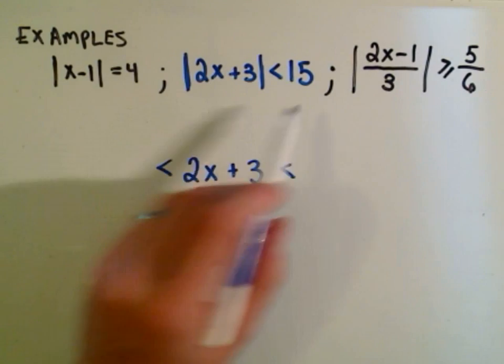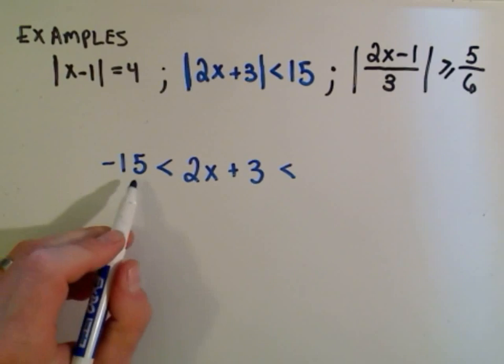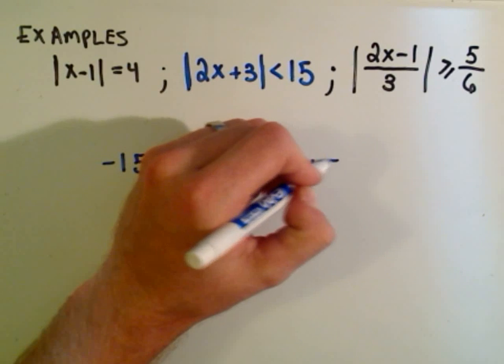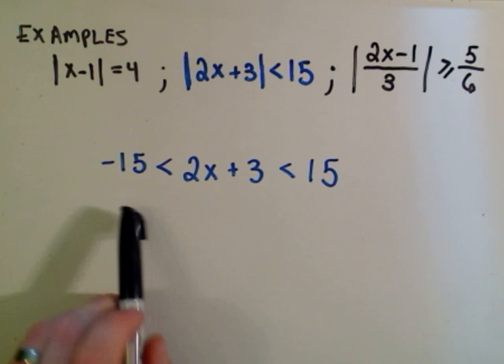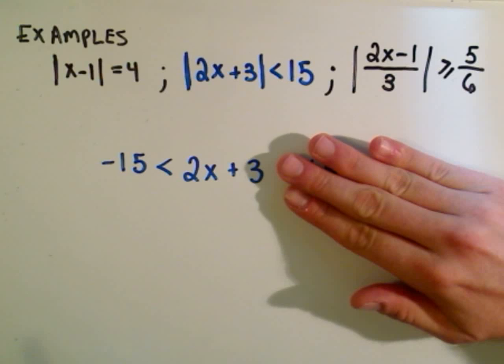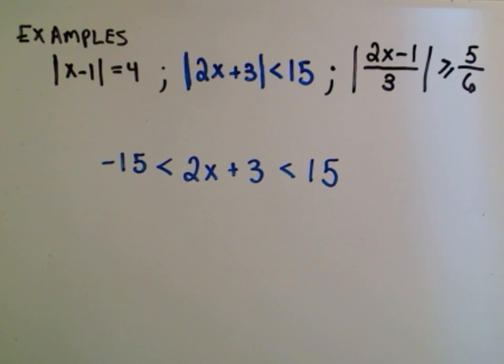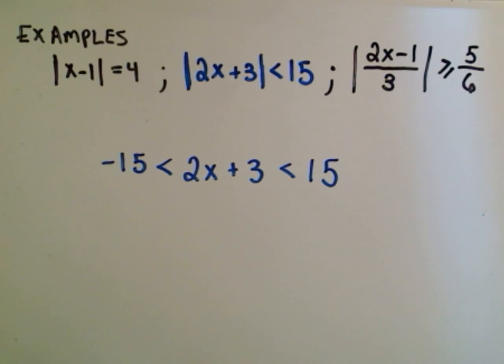Whatever number's on the right side, you put the inequality in between negative of that number and positive of that number. This is what's known as a compound inequality. We're really just solving negative 15 less than 2x plus 3 and 2x plus 3 less than 15, except we're going to do them at the same time.